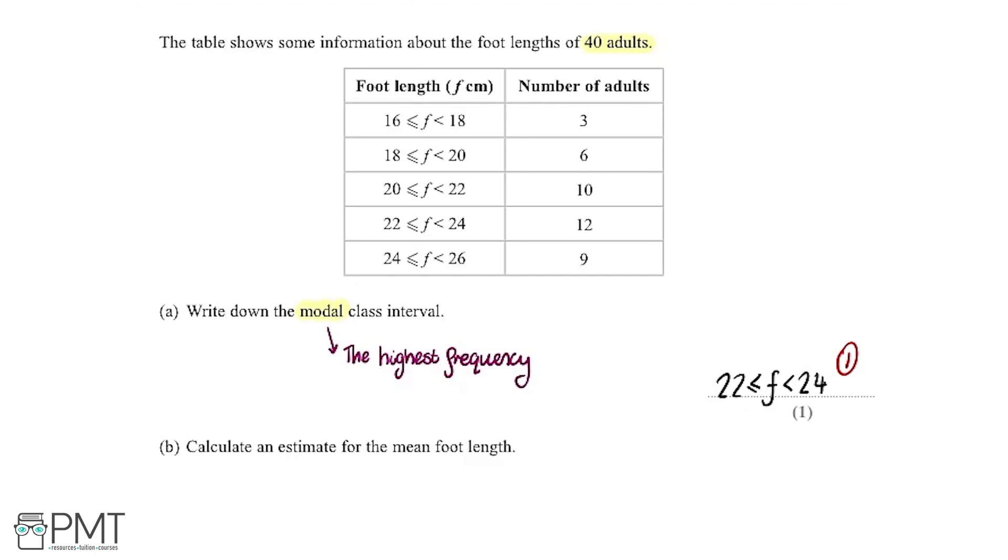Part B says we need to calculate an estimate for the mean foot length. I'm going to go straight back up and we're going to do some work with the table. I'm actually going to add in a couple of extra columns.